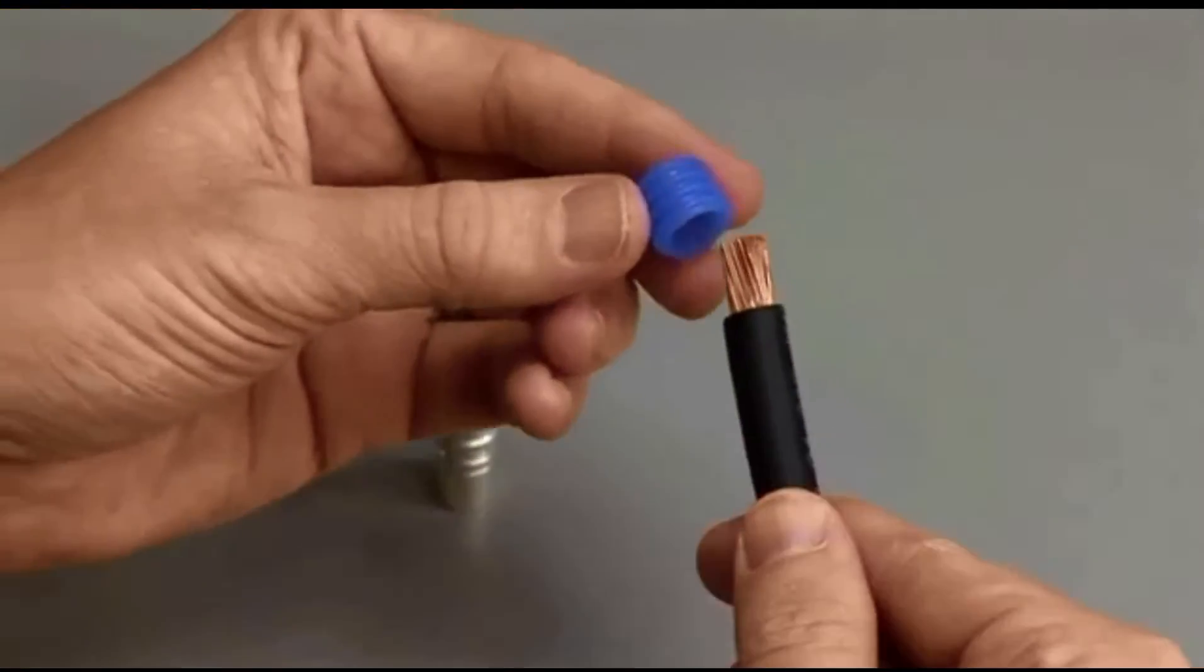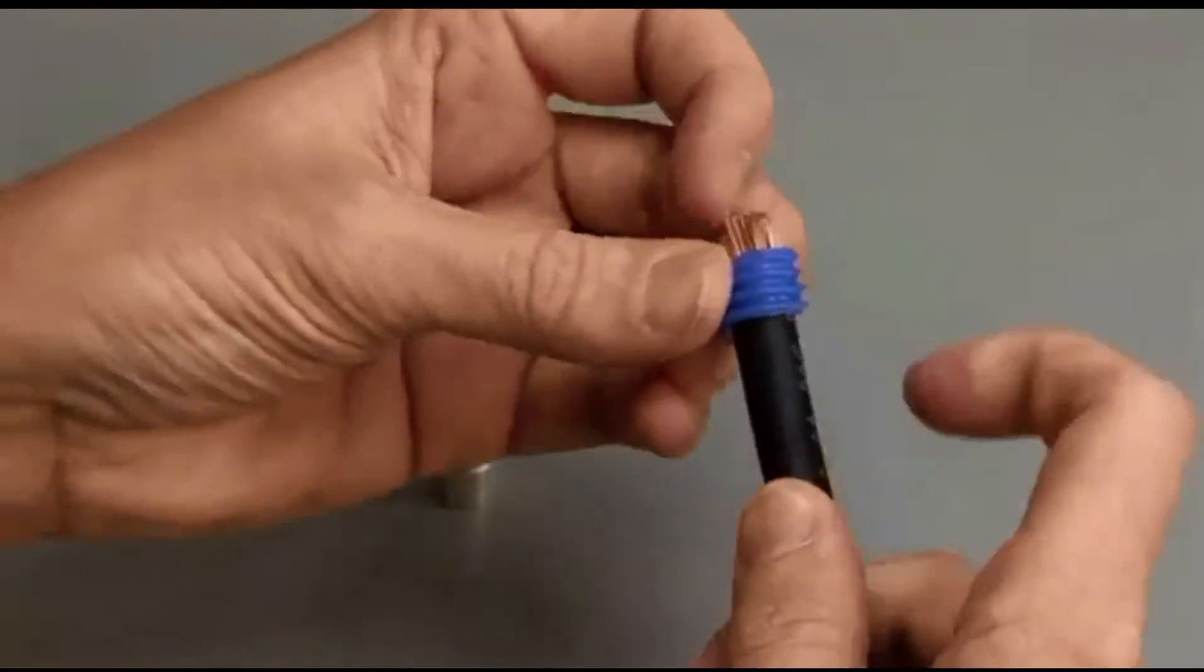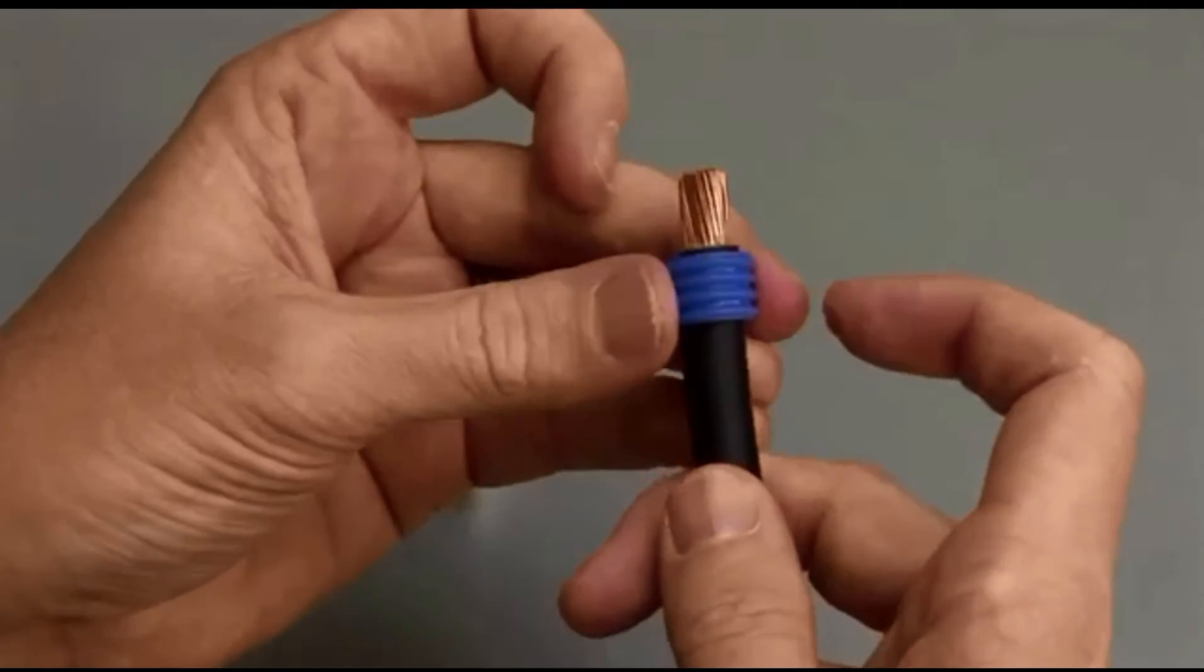Begin with a stripped wire. Wire seal grommets are required in order to maintain an environmental seal. Slide the wire seal into place on the stripped wire.